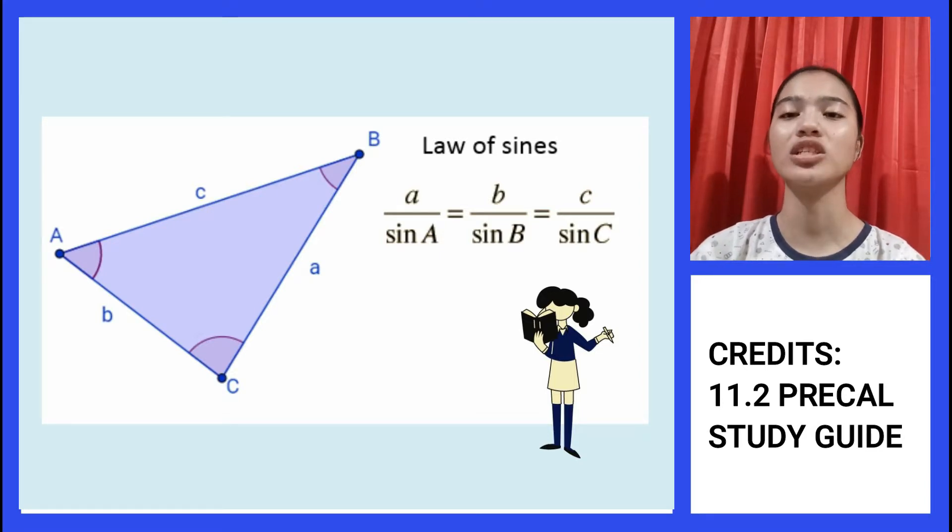And so, we will have the equation sin A over a equals sin B over b equals sin C over c. You can use this given formula to find any missing angles and sides of a triangle.